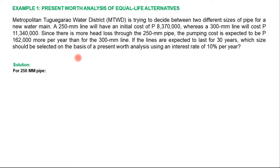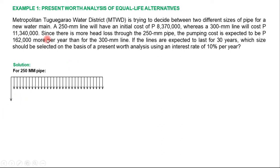The first step is to draw the cash flow diagram for each alternative. In drawing the cash flow diagram, all arrows pointing downward are considered expenses or outgoing cash flows, and all arrows pointing upward are considered revenues or incoming cash flows. For the 250 mm pipe, the duration of the project will be 30 years, so there will be cash flows for N equal to 30.